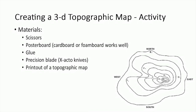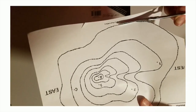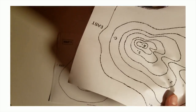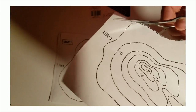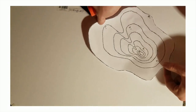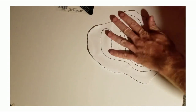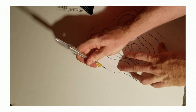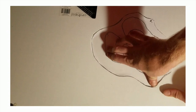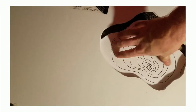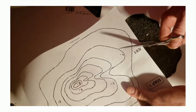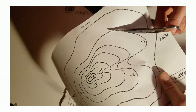The topo map shown here is the one used for this demonstration. To begin, start out by cutting along the outline of the first contour — most likely the lowest elevation contour depending on your printout. Next, glue the contour area to your poster board and make sure it sticks and does not easily move around. Using the precision blade, carefully trace along the outline of the contour until you have completed the outline. The cutout should easily pop out of the poster board, but you may need to retrace the outline with your blade. Set this first contour area aside.